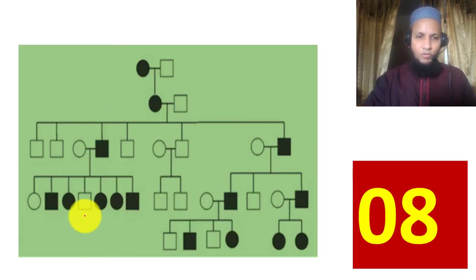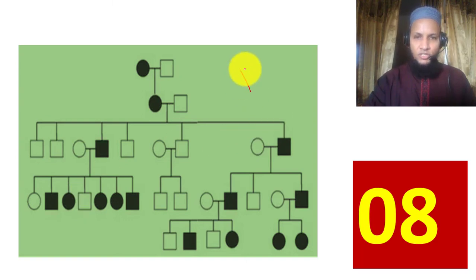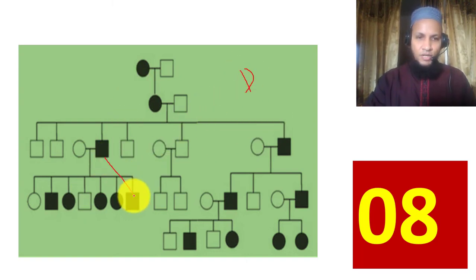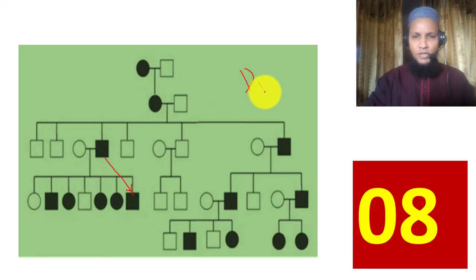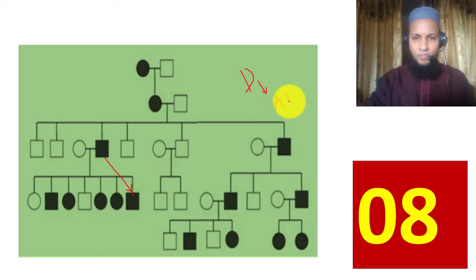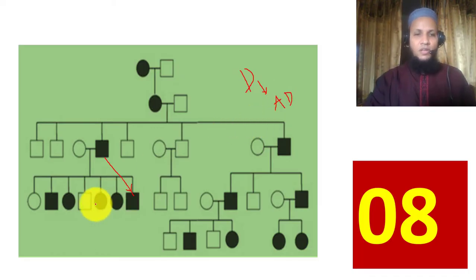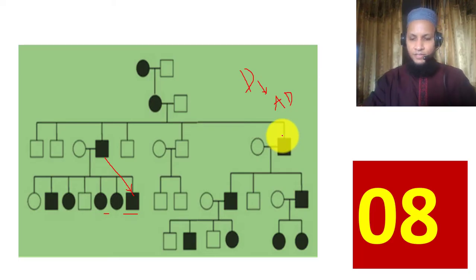Example 8: There is no skipping of generation — this is dominant. There is male-to-male transmission, and both males and females are affected. Therefore this is autosomal dominant.